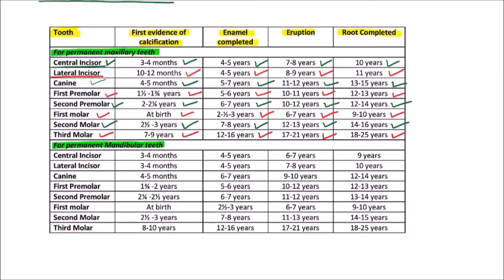For permanent mandibular teeth, the central incisor has its first evidence of calcification at 3 to 4 months, enamel is completed by 4 to 5 years, eruption occurs by 6 to 7 years, and the root is completed by 9 years.